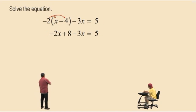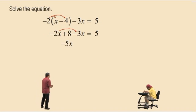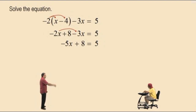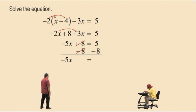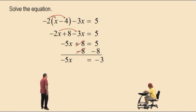Now we combine like terms on the left-hand side, Charlie. So what's negative 2x plus a negative 3x? Negative 5x. That's right. Bring down your work. Now what comes next, Charlie? Subtract 8 from both sides. That's right. Subtract 8 from both sides. That isolates the negative 5x on the left-hand side. Right-hand side, what's 5 plus a negative 8? Negative 3. Same as 5 subtract 8, right? 5 subtract 8 is negative 3.